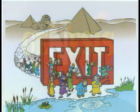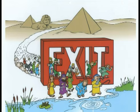Next book: Exodus. In the background you see a sphinx and pyramids — where are those? Egypt. And what are they doing? They're leaving Egypt, exiting out of Egypt. The book of Exodus is about leaving Egypt and going to the promised land.